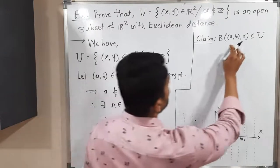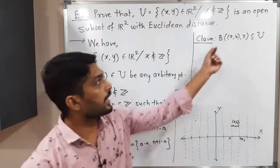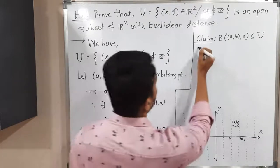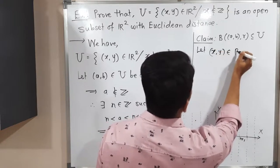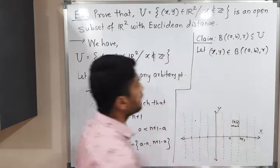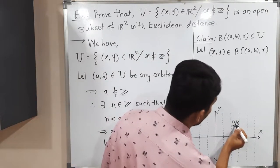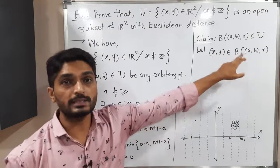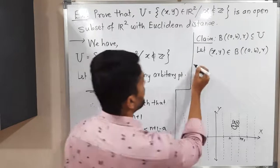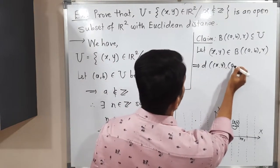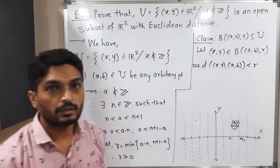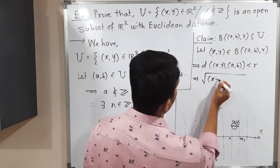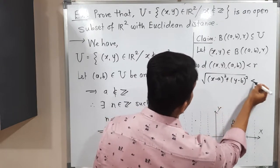To prove one set is a subset of another, we take an arbitrary point from the first set and prove it is in the second set. Let (x, y) belong to the open ball with center (a, b) and radius r. Since this point lies inside the ball, the distance of (x, y) from (a, b) is less than r. The Euclidean distance gives us √((x-a)² + (y-b)²) < r.